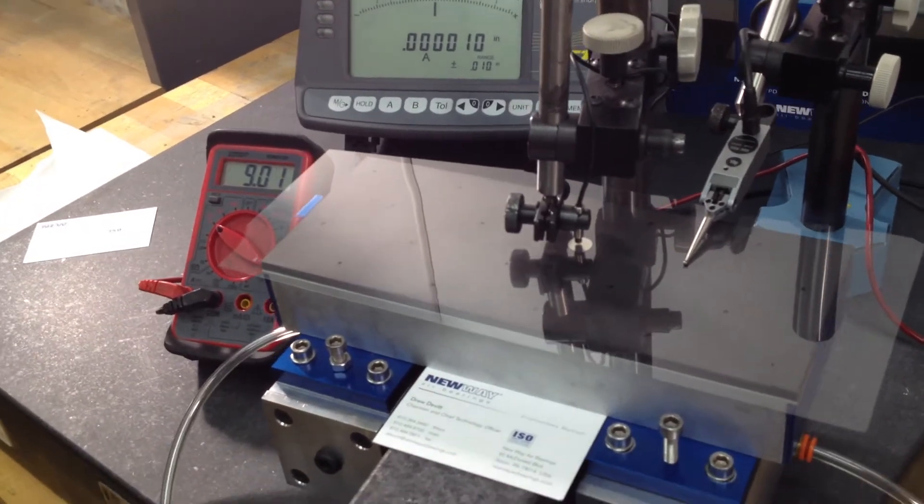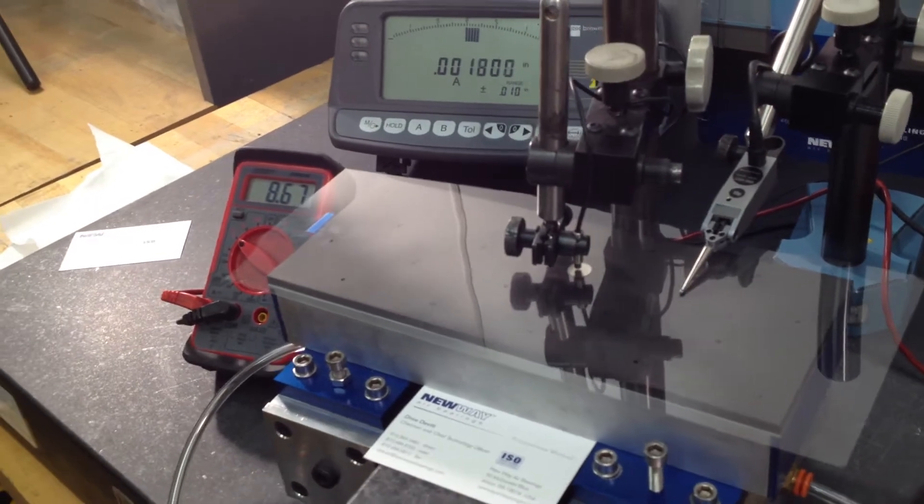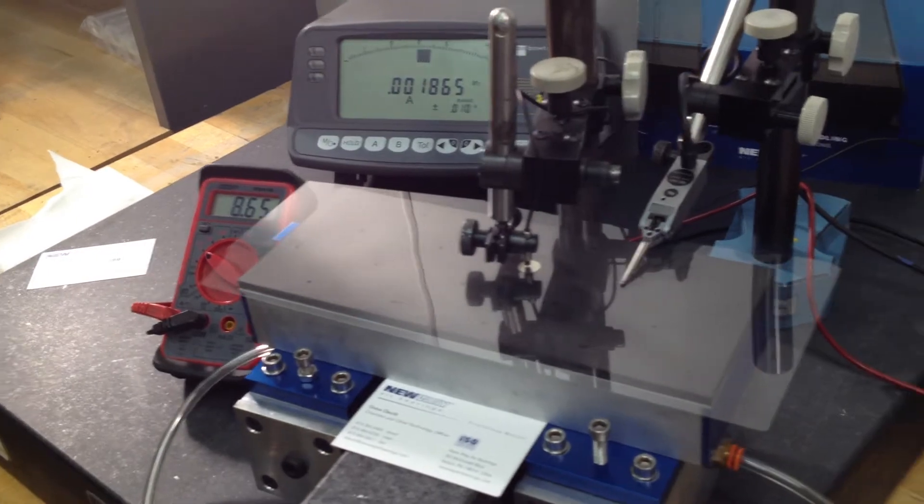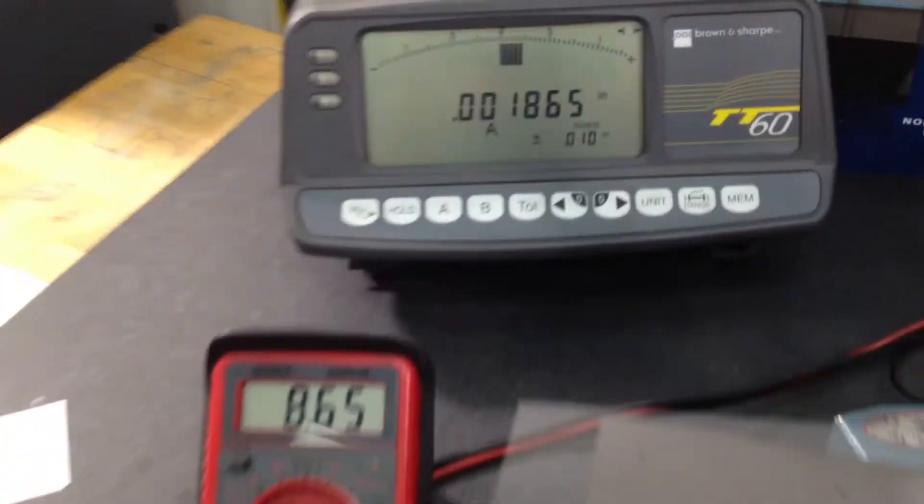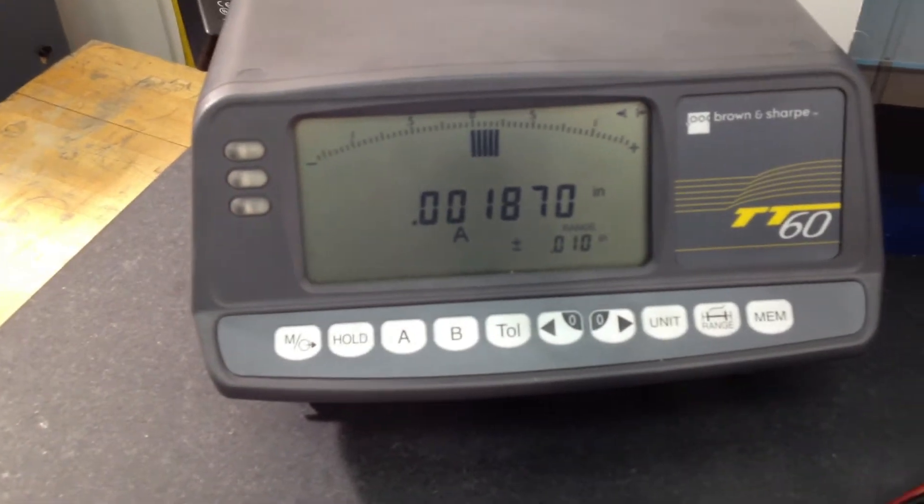But when we put the air pressure on, now you can see that line you see being reflected from the wall shows the dimpling that's going on. And you can see the fly height is now on the order of two thousandths of an inch.